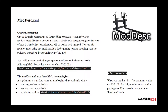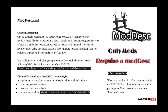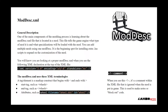One of the main components of the modding process is learning about the moddisk.xml file that is located in a mod. If you're digging around inside your game files for moddisk, the only one you're really going to find is for the maps and for the game in general, because only mods require a mod description. This file tells the game engine what type of mod it is and what specializations will be loaded with the mod.